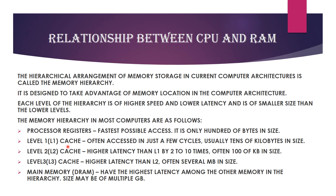Level 1 Cache is often accessed in just a few cycles and is usually tens of kilobytes in size. Level 2 Cache has higher latency than L1 by 2 to 10 times and is often hundreds of kilobytes in size. Level 3 Cache has higher latency than L2 and is often several megabytes in size. Main memory, i.e., DRAM, has the highest latency among all the memory types in the hierarchy.